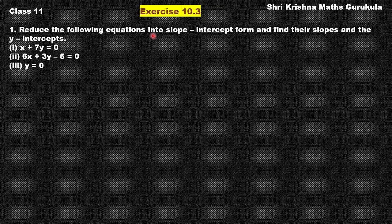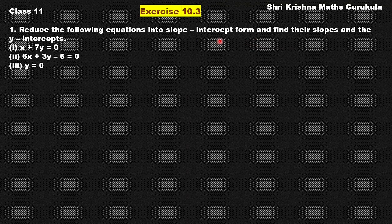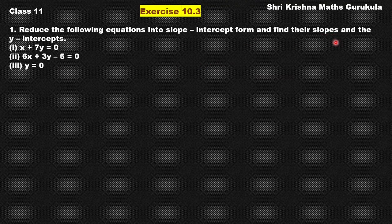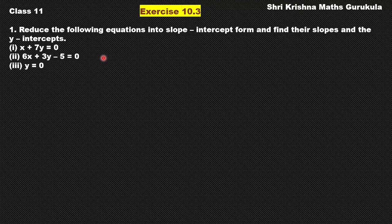Reduce the following equations into slope-intercept form. They have given us three equations. We have to bring them to slope-intercept form and we have to find their slopes and y-intercepts. In this sum we are only going to change the form of the equation of the line and find the slopes and y-intercepts.